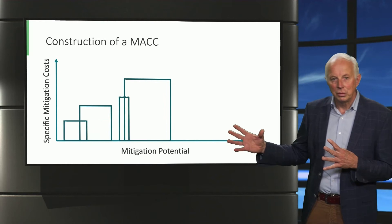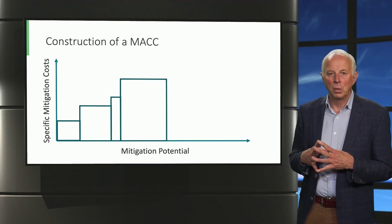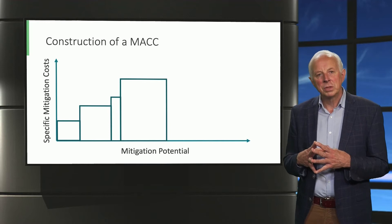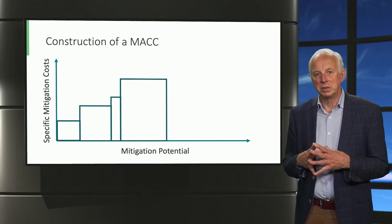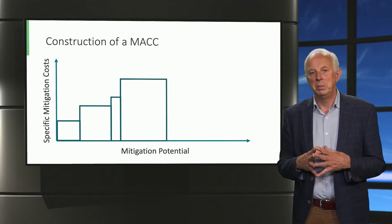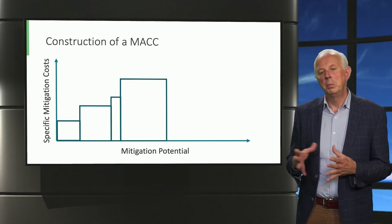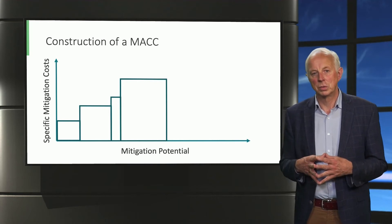What we now do is to organize them from cheap to expensive. So we start at the left with the option with the lowest costs. Now we get a visual overview of how much you can in total reduce emissions and what cost levels you should accept for a given emission reduction. So this is how typically a marginal abatement cost curve is constructed.